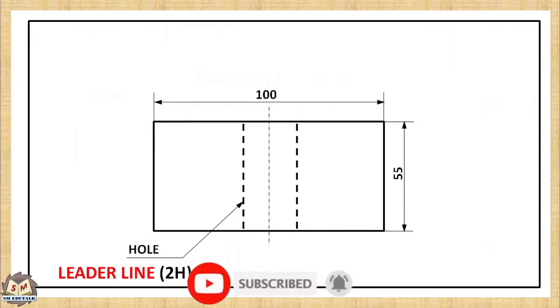Leader line is a thin continuous line referring to a feature like dimension, object, outline and other information. It is terminated by an arrowhead. Here, it describes the dotted lines are used to indicate a hole. This line should be drawn by 2H pencil.